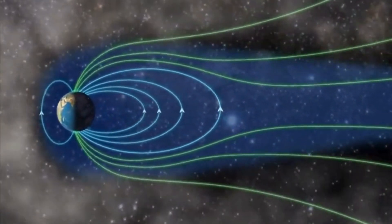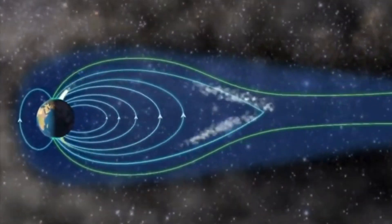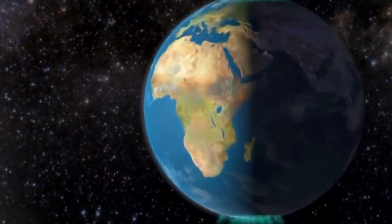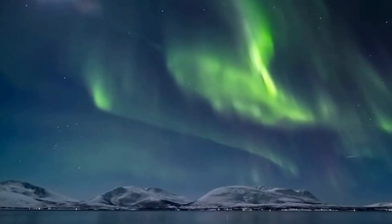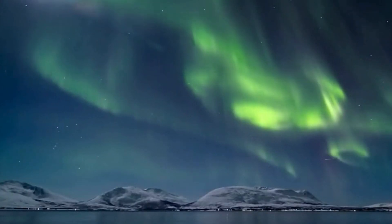Fortunately, the earth has a strong magnetic field that can protect it from these particles and redirect them towards the earth's poles, where in most cases, beautiful polar auroras are formed.